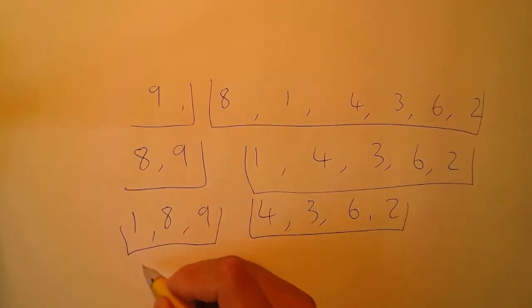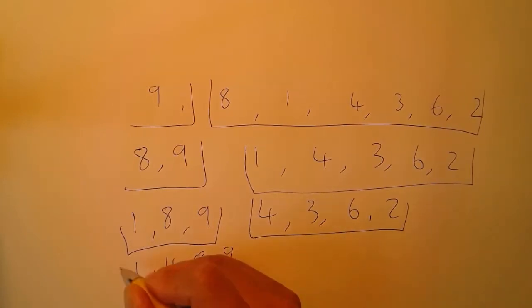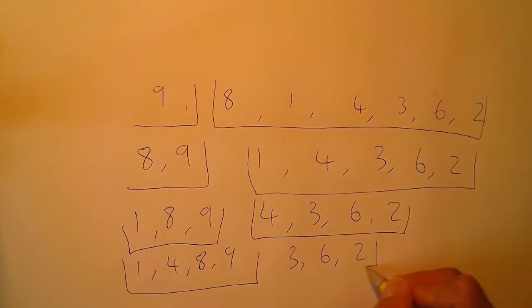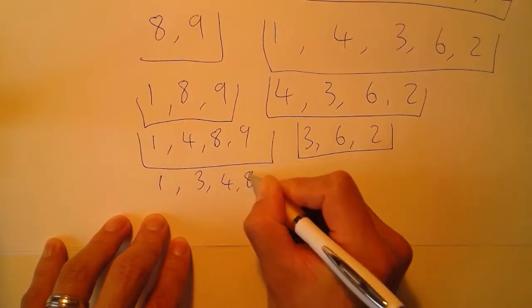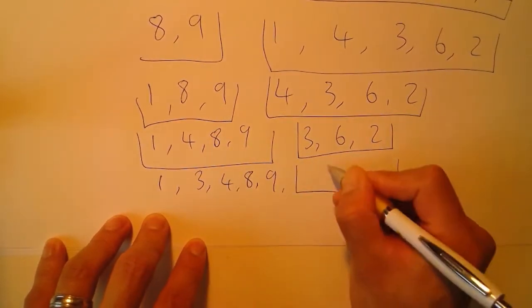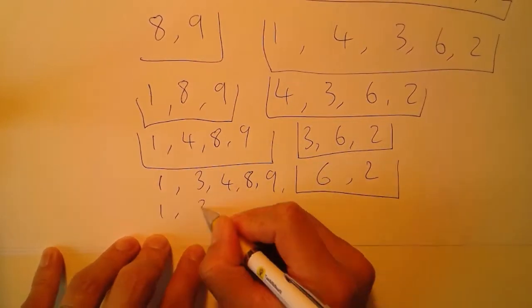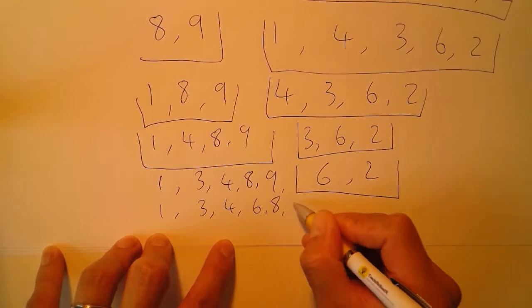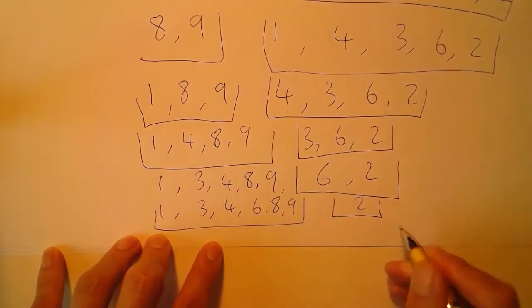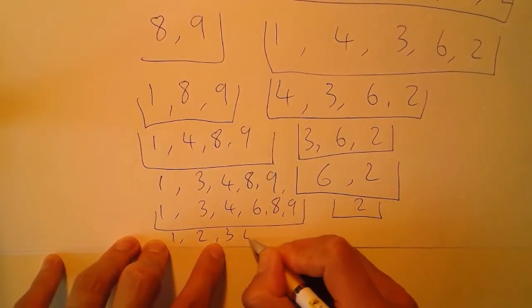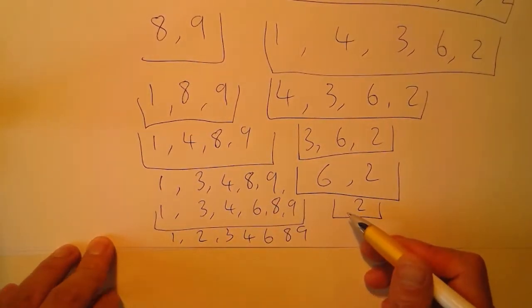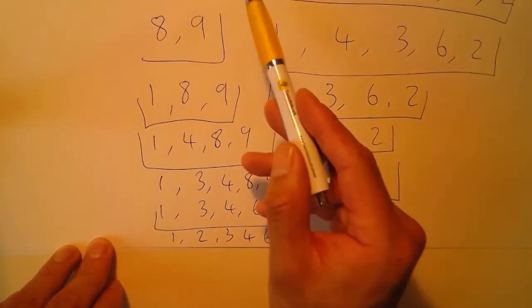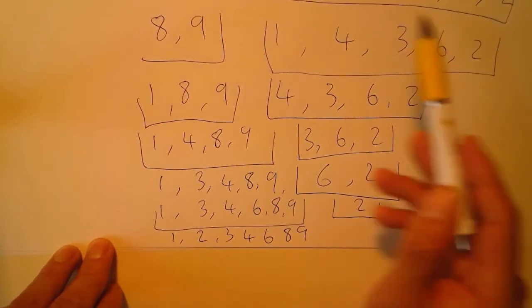The next iteration we take 4 and it gets inserted between 1 and 8, giving us 1, 4, 8, 9, and the unsorted is 3, 6, 2. We carry on: 3 gets placed between 1 and 4 giving 1, 3, 4, 8, 9, and the unsorted array is just 6 and 2. A couple more passes: 1, 3, 4, 6, 8, 9 is sorted and 2 is unsorted. Then finally 1, 2, 3, 4, 6, 8, 9 — the data has been sorted.